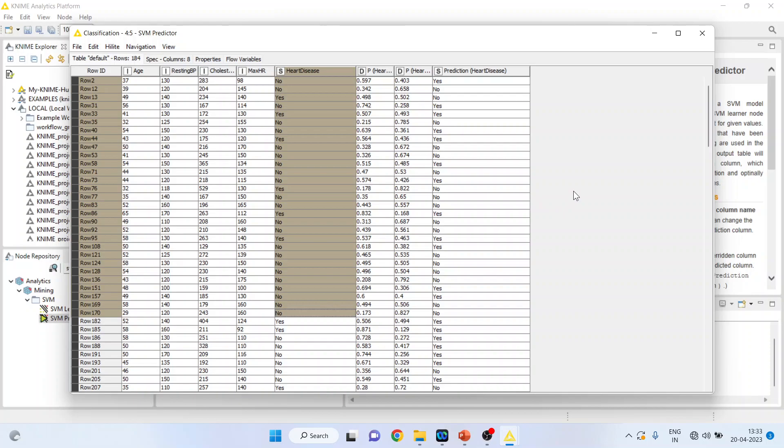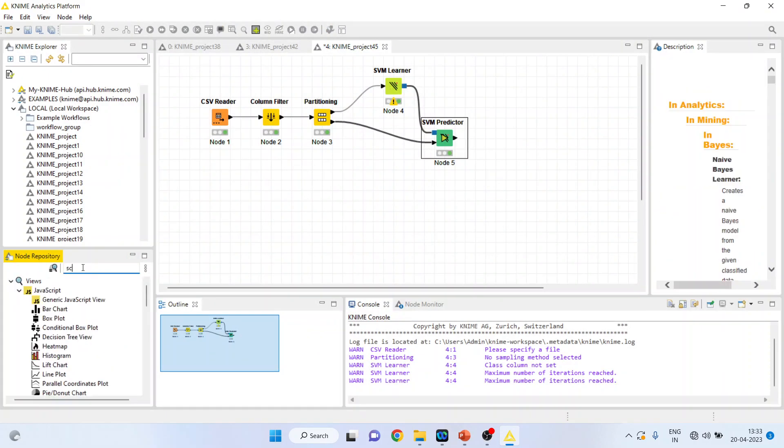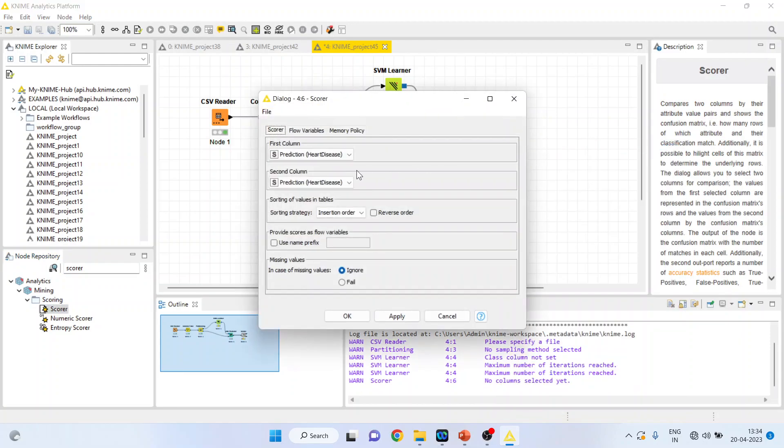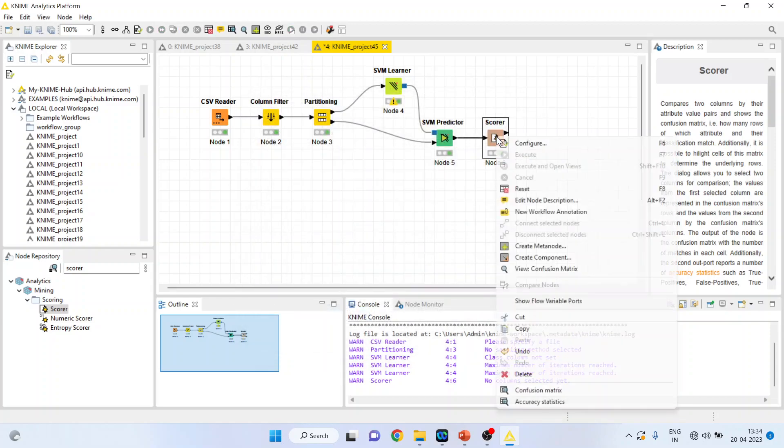Now we want to check how well the algorithm fits to the data. For this, I'll activate the scorer. Right-click on it and configure. Here, original data, you want to compare this with the prediction heart disease, click OK. Right-click on it and execute. Again, right-click on it and view the confusion matrix.